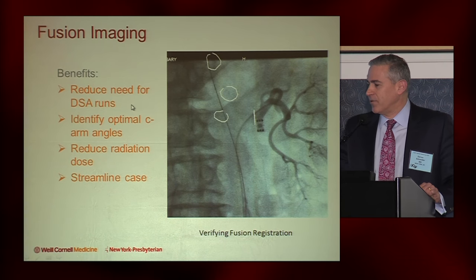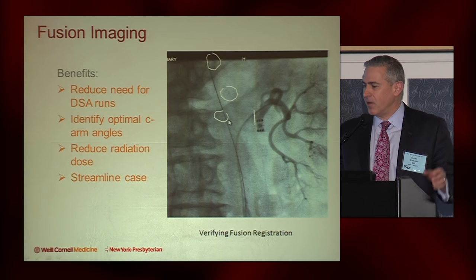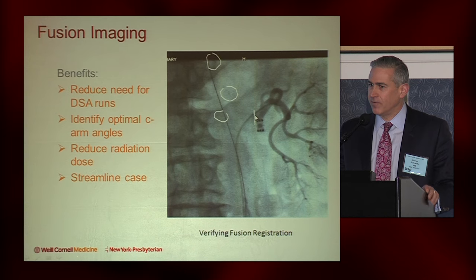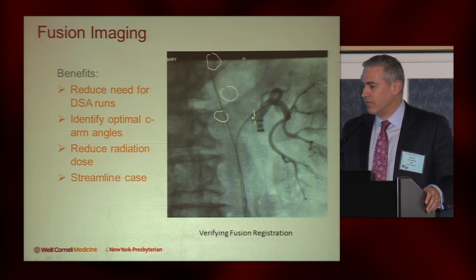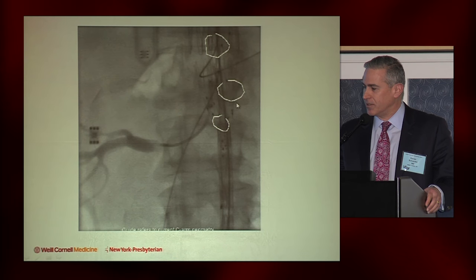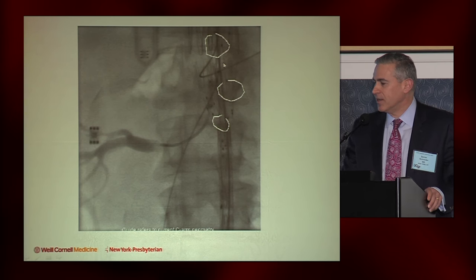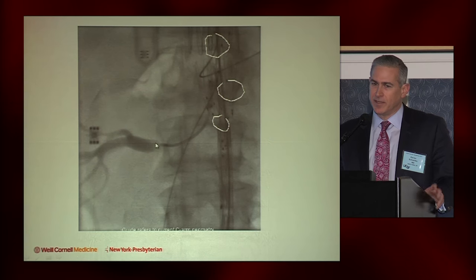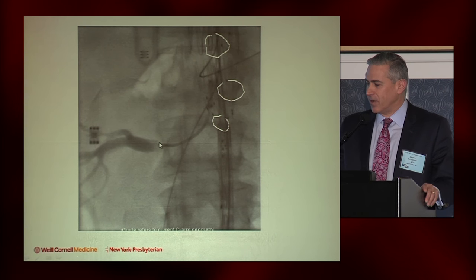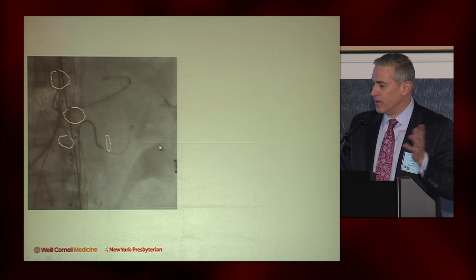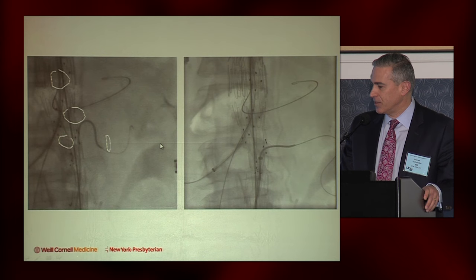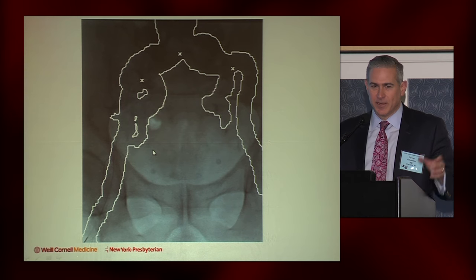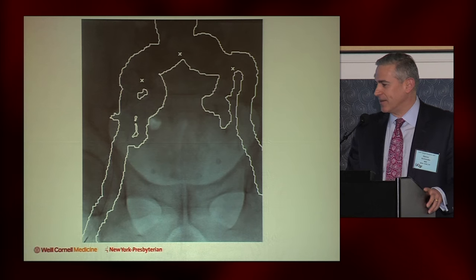We reduce the need for DSA runs. The other thing we can do is immediately know the optimal C-arm angles — once you get this ring perpendicular, you know you have the right alignment, so you don't have to do a bunch of angiography to get the right orientation for the vessel. All of that reduces radiation doses and streamlines these cases. Here you can see another example where we've already positioned our device — a four-vessel fenestrated device with a catheter coming through one of the fenestrations in the right renal artery. Again, no DSA to confirm we're there, just a little puff of contrast through our catheter. You can create more sophisticated overlays, though I actually don't like these because they present too much information on the screen and I think they get in the way.